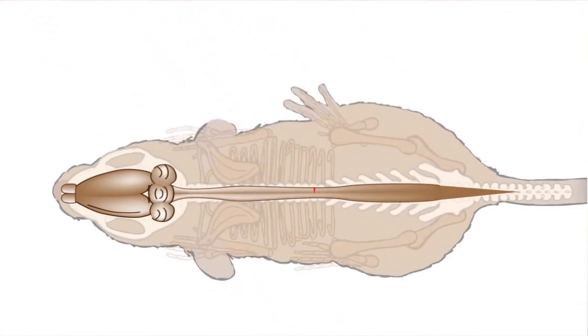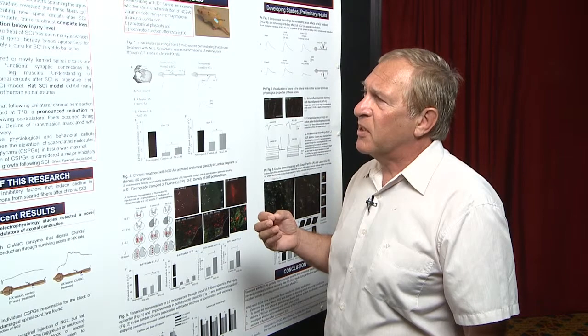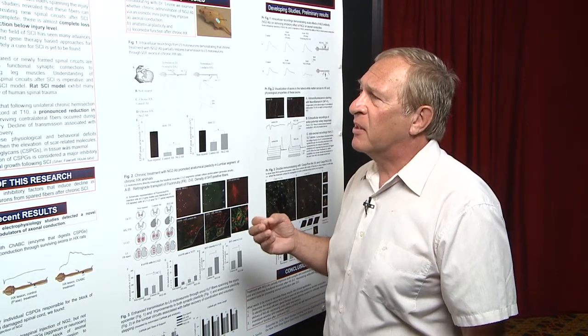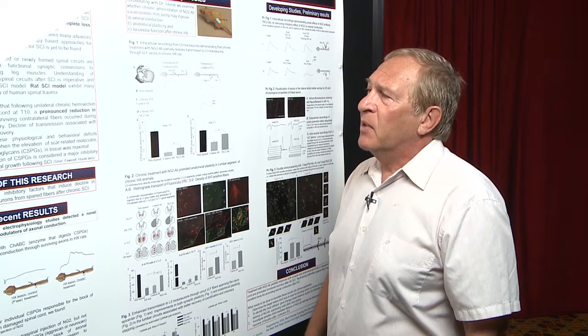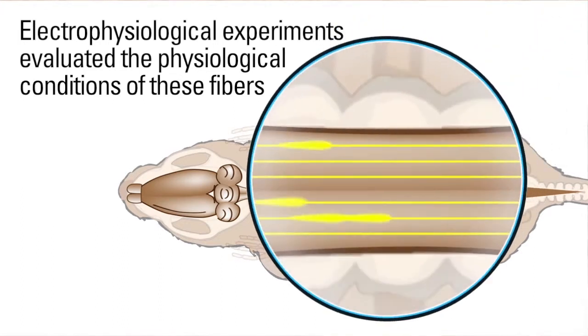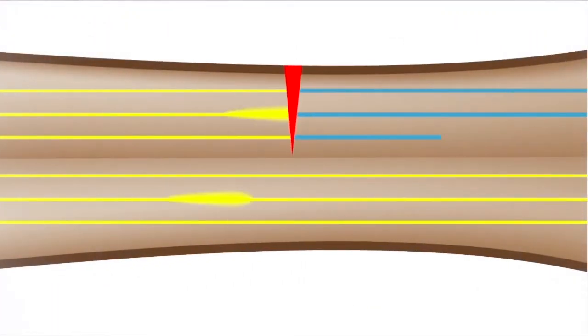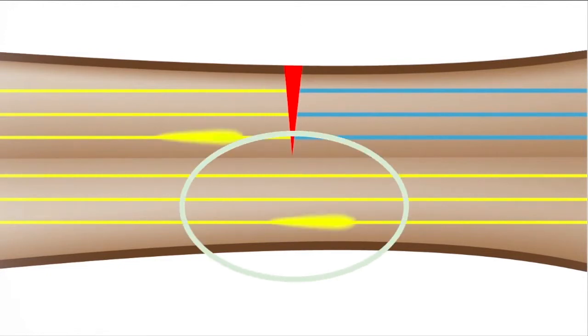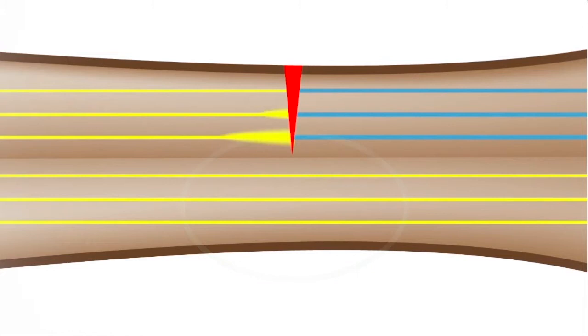In order to understand why these surviving fibers cannot mediate better recovery, we did electrophysiological experiments in which we evaluated the physiological condition of these fibers. We found that immediately after injury, the surviving fibers can transmit to motor neurons.